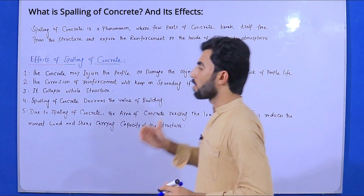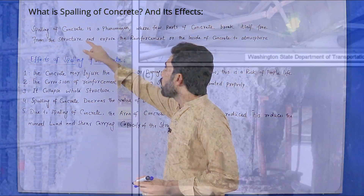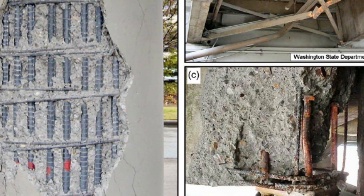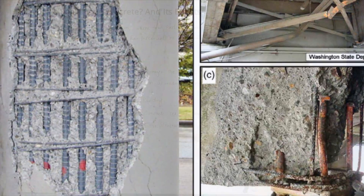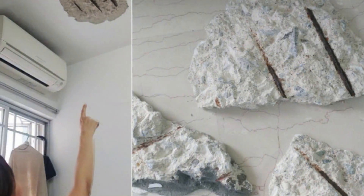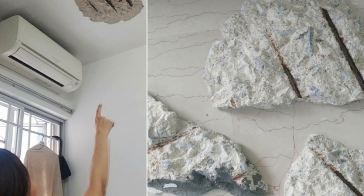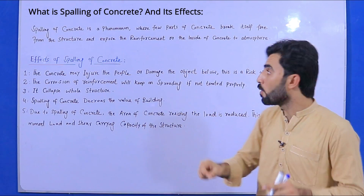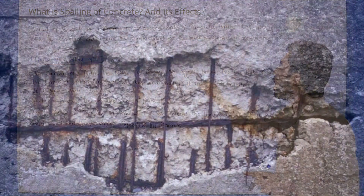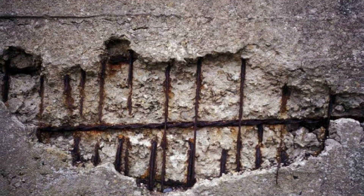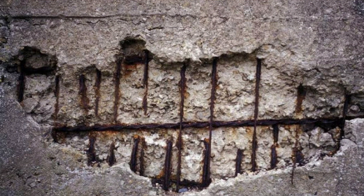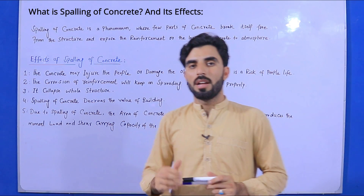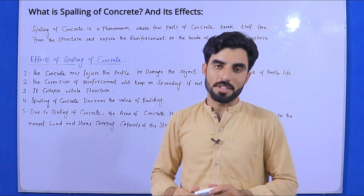What is spalling of concrete? Spalling of concrete is a phenomenon where a few parts of concrete break off and free themselves from the structure, exposing the reinforcement or inside of the concrete to the atmosphere. This is called spalling of concrete.